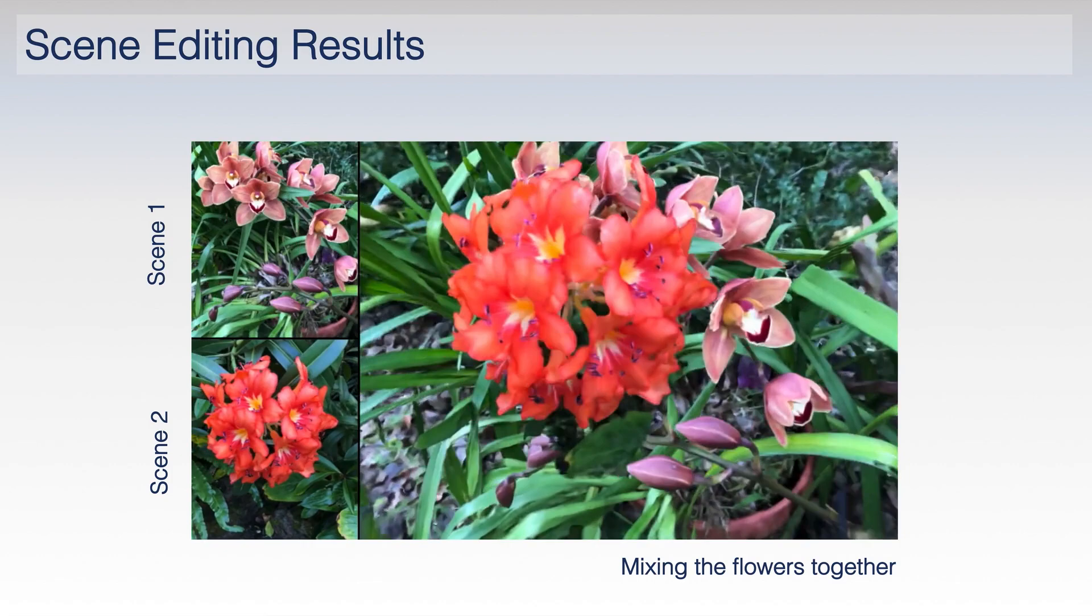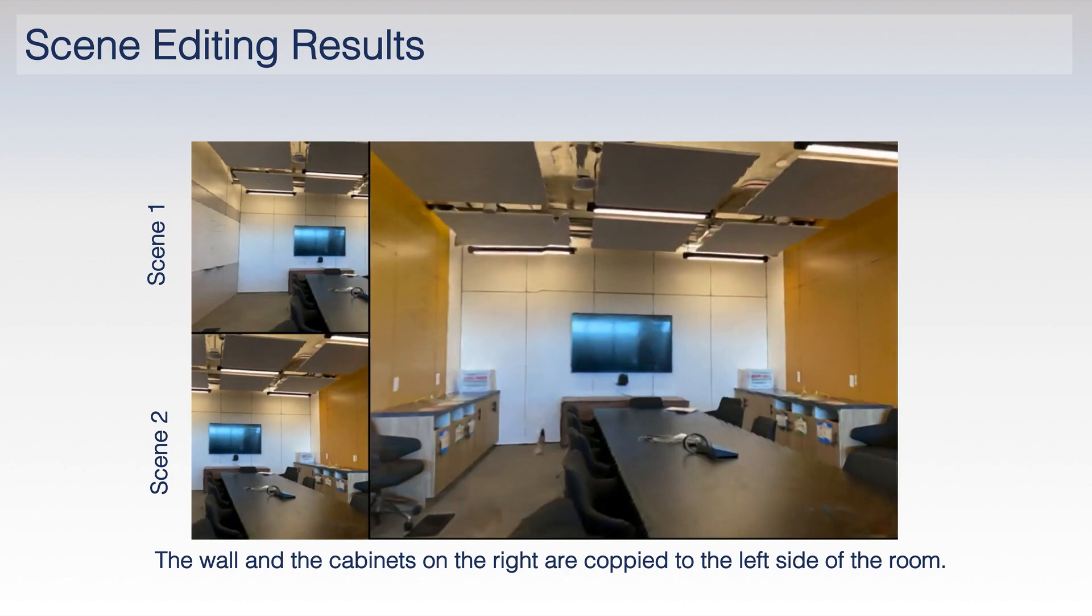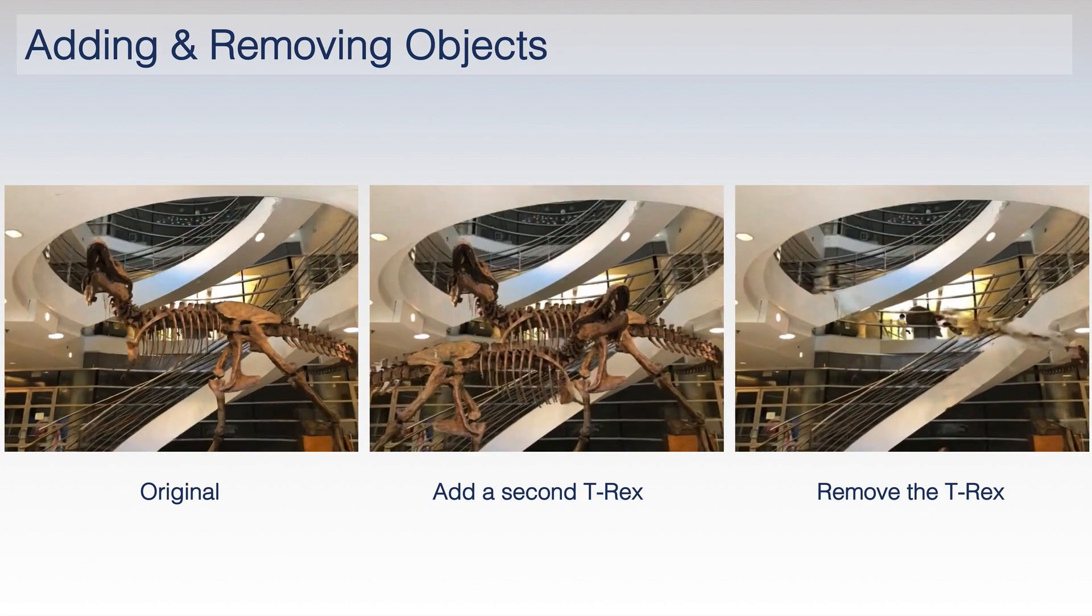Next, I will show you some of our editing results. In these examples, you see two flowers from two different scenes now growing together. Editing is possible within a single scene as well. Take a look at the wall on the left where the whiteboard used to be in the original scene; now we have a yellow wall and cabinets.